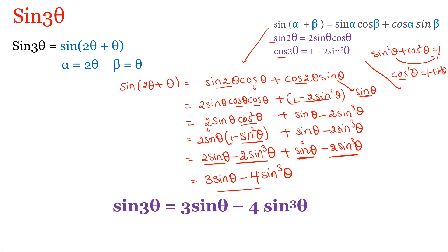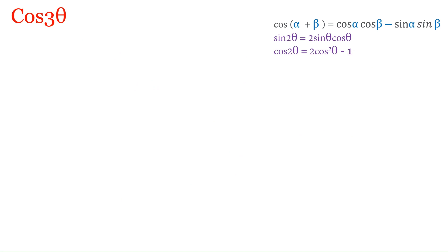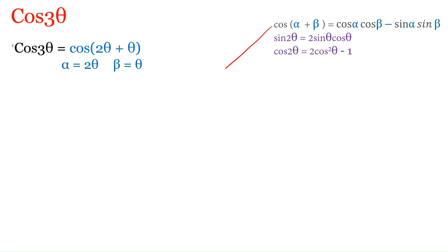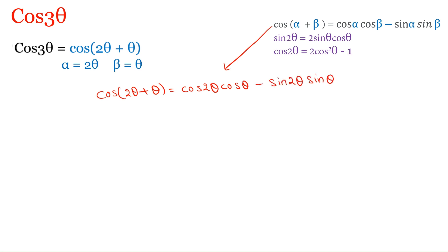Now we will look for cos 3θ. For this we have to know all three formulas listed: the sum and difference formula, the cos 2θ formula, and the sin²θ + cos²θ = 1 identity. Cos 3θ has to be written as cos(2θ + θ). Comparing with the sum formula, α = 2θ and β = θ, so we substitute to get cos 2θ · cos θ − sin 2θ · sin θ.